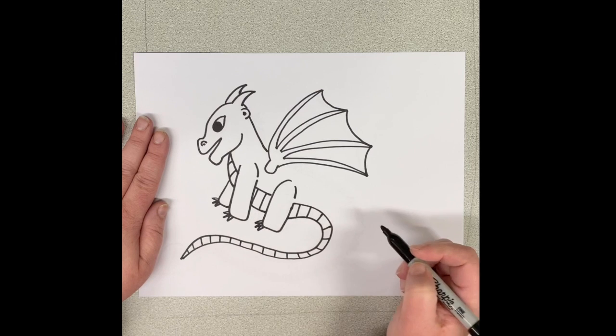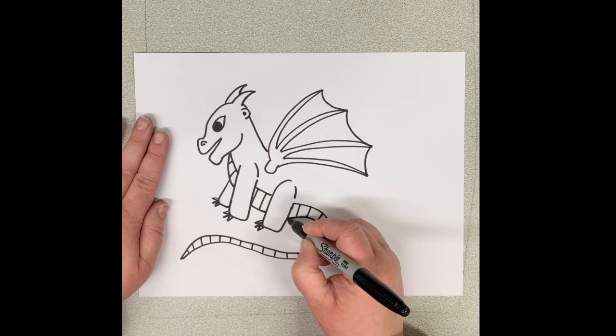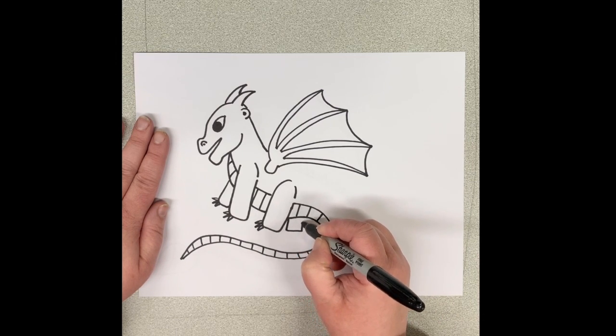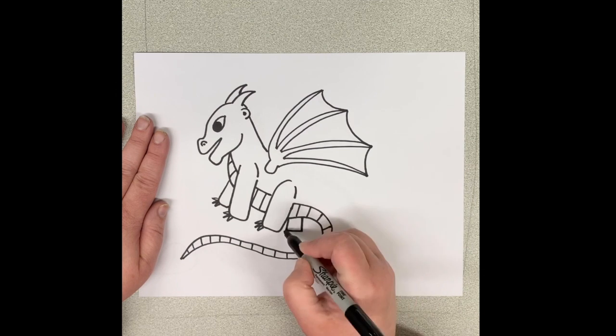Then we have to remember to put some nails on his back foot. And draw in his other hidden back foot. And add some nails on to that too.